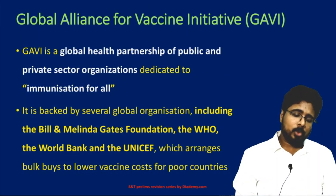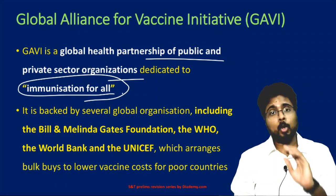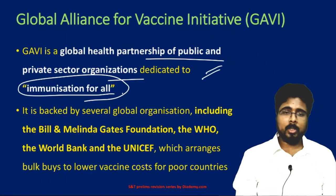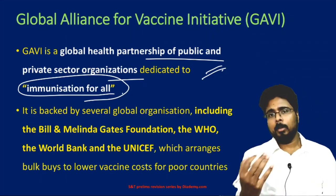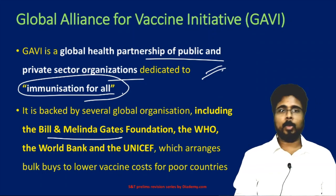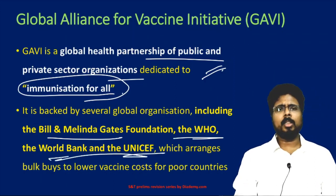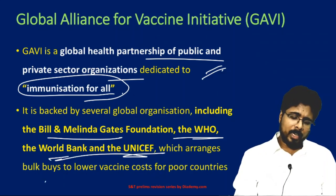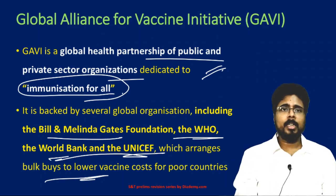The Global Alliance for Vaccine Initiative is a global health partnership of public and private sector organizations dedicated to immunization for all. It is backed by several global NGOs and health organizations including the Bill and Melinda Gates Foundation, WHO, World Bank, and UNICEF. They arrange bulk buys of vaccines at low cost for people in poor countries — it is an initiative for global immunization.